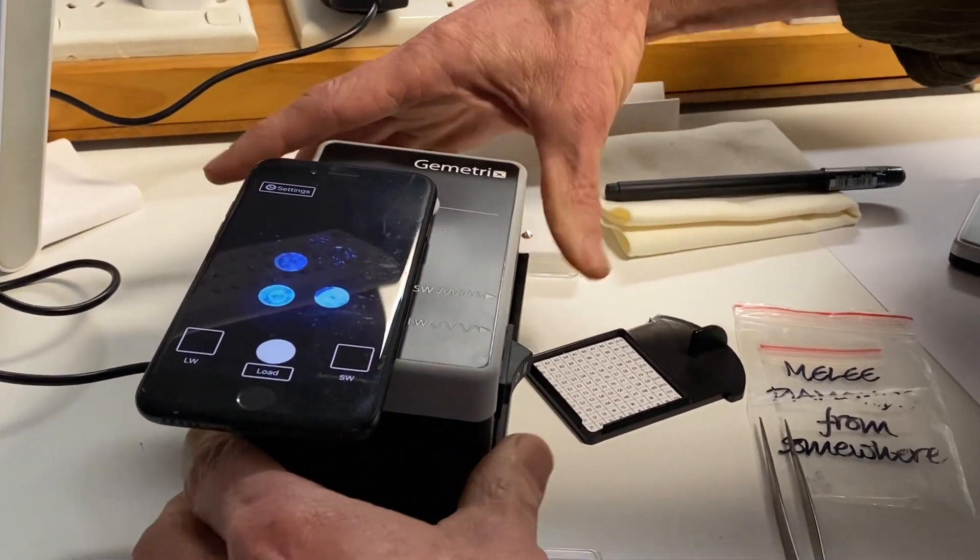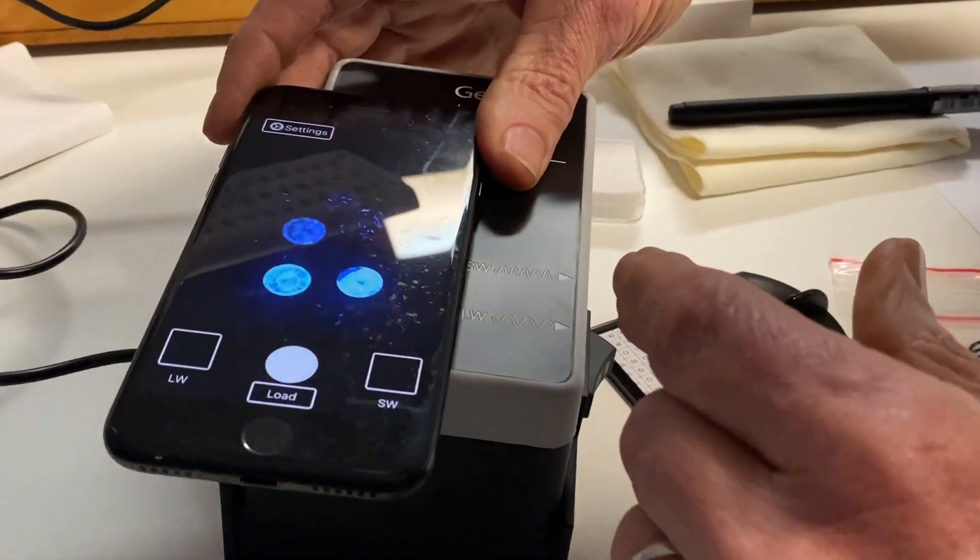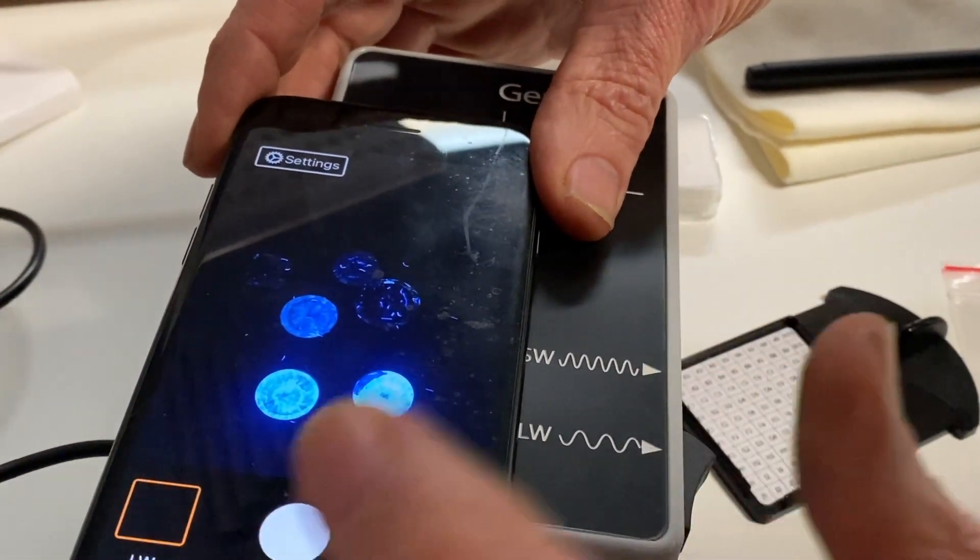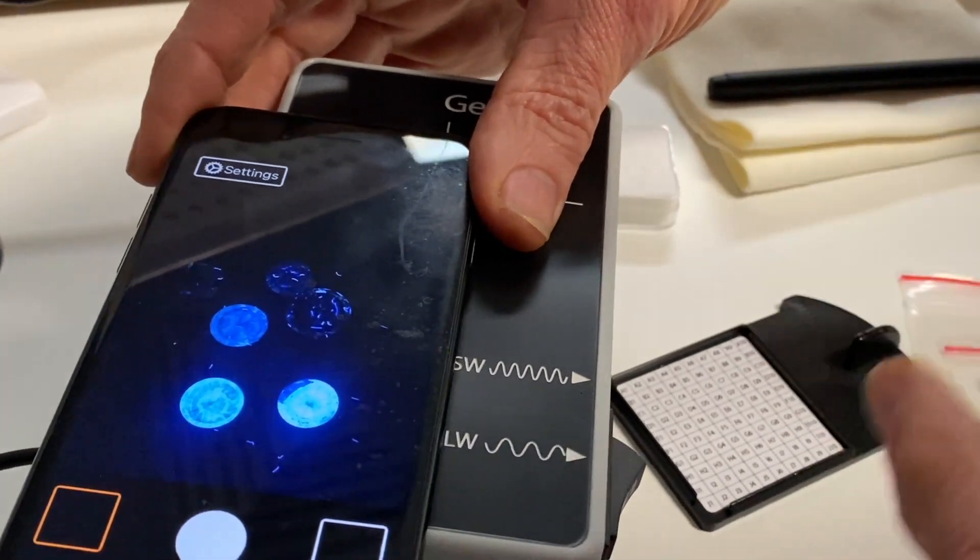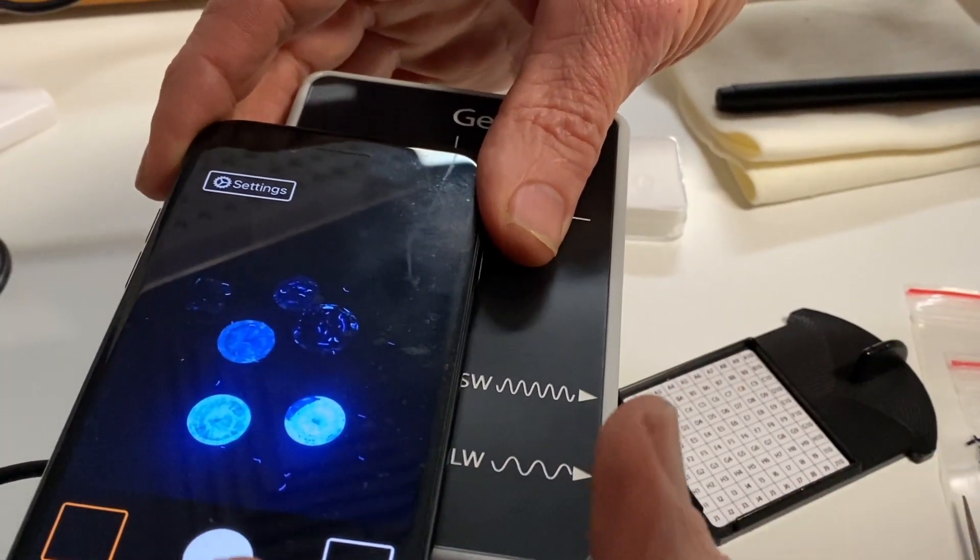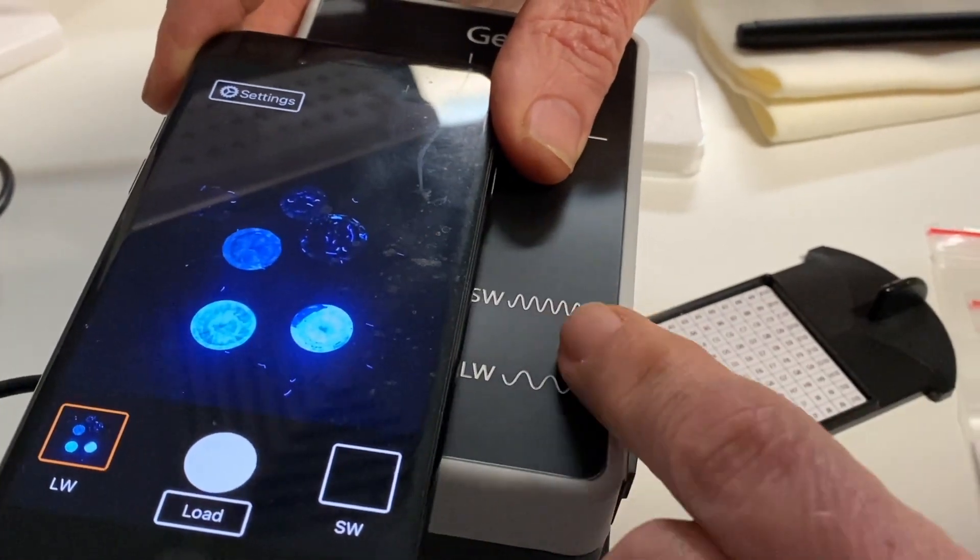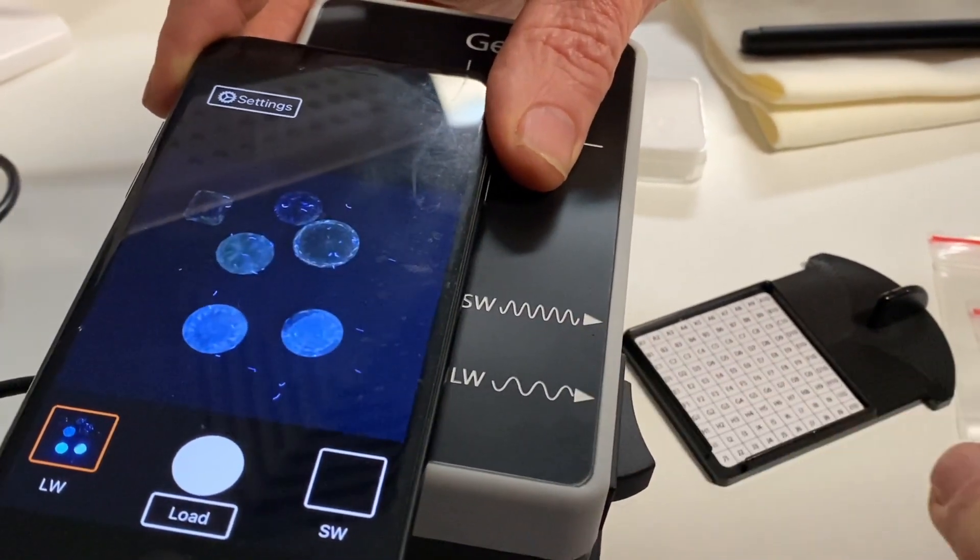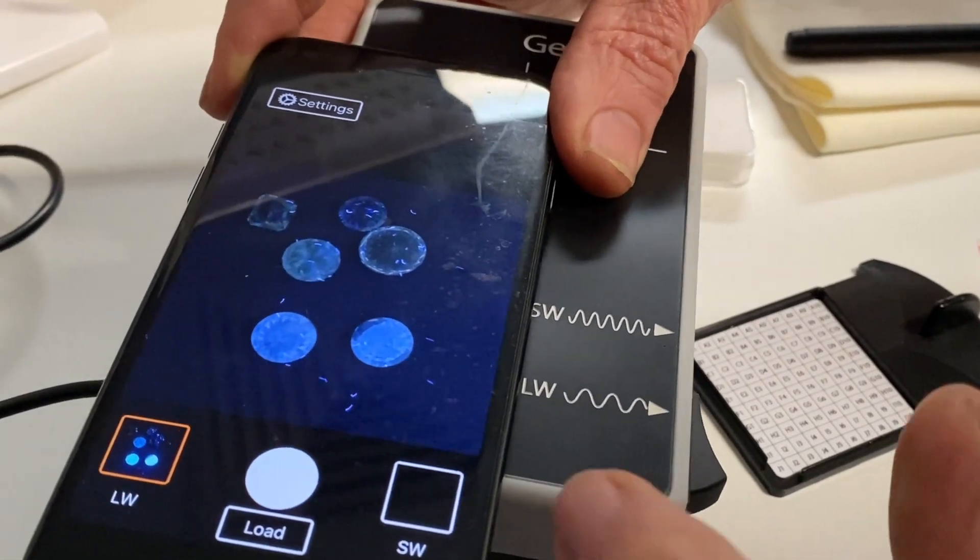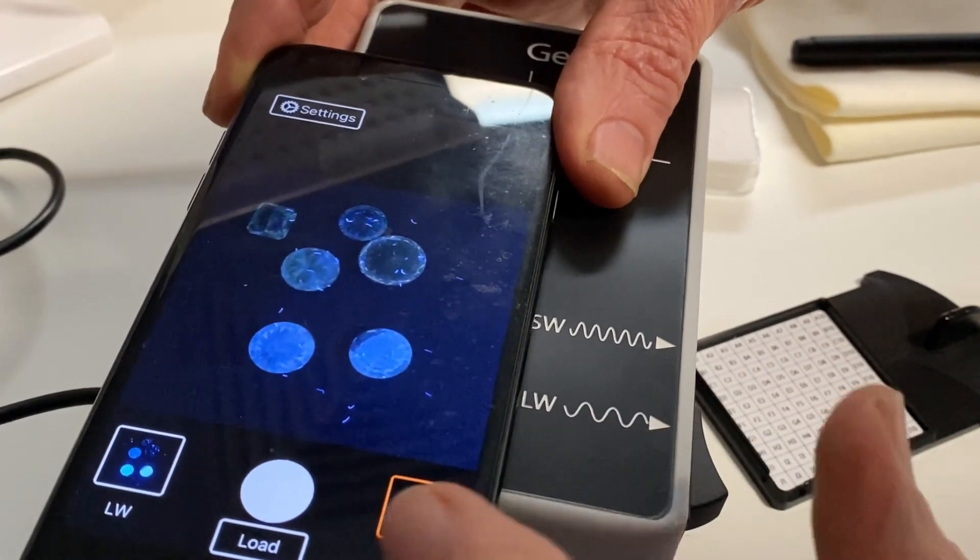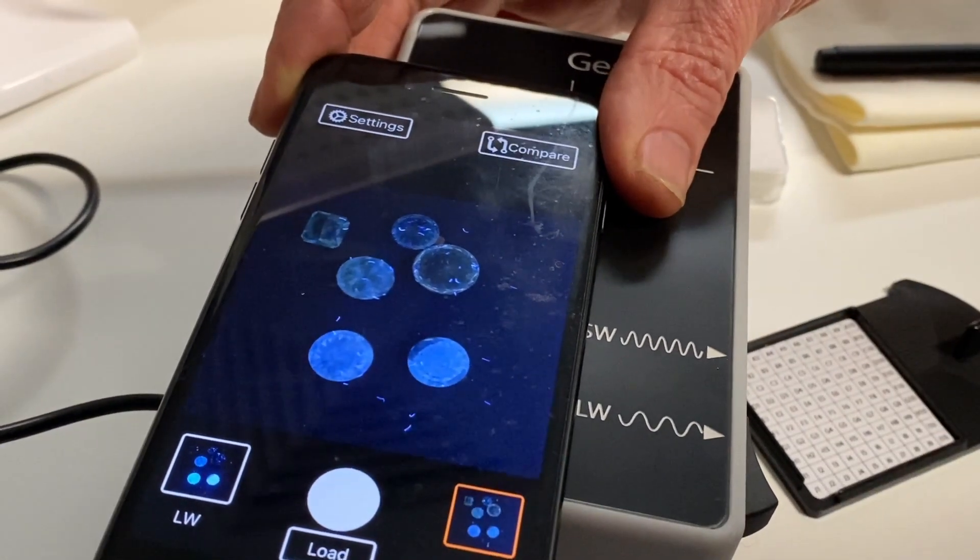So, there's a long wavelength, and you can see the diamonds. Oh, they're glowing! They're all different strengths, aren't they? And they're a bit dusty as well. But the key here is to compare the long wave and the short wave reaction.